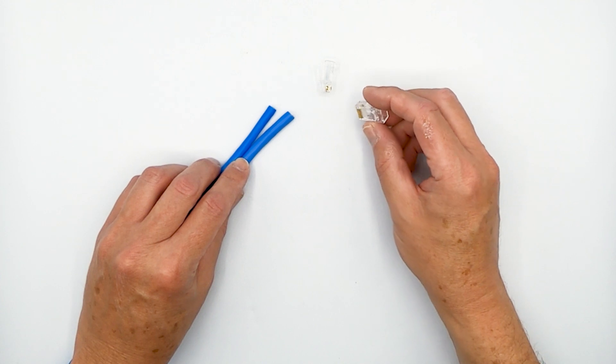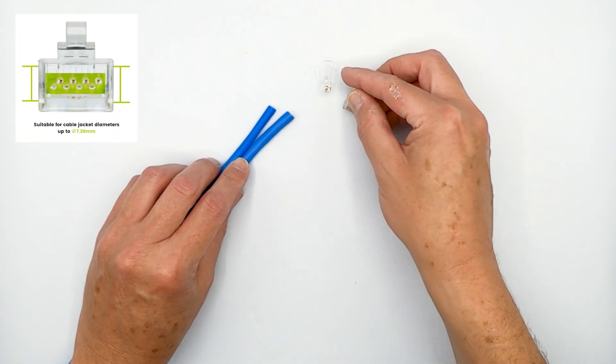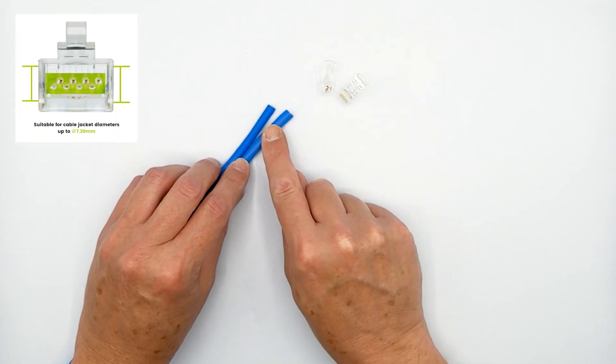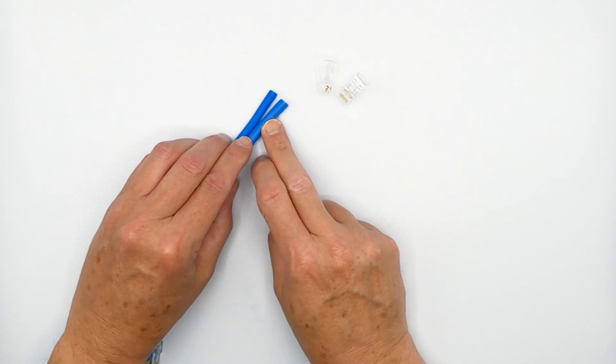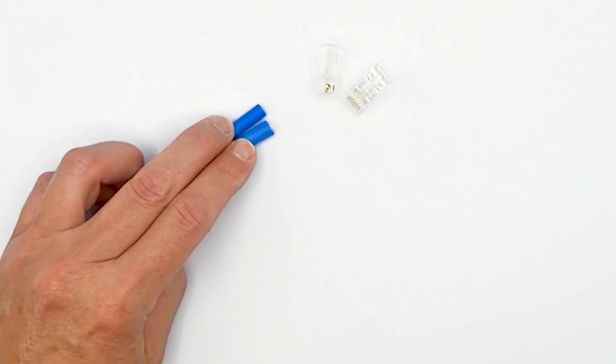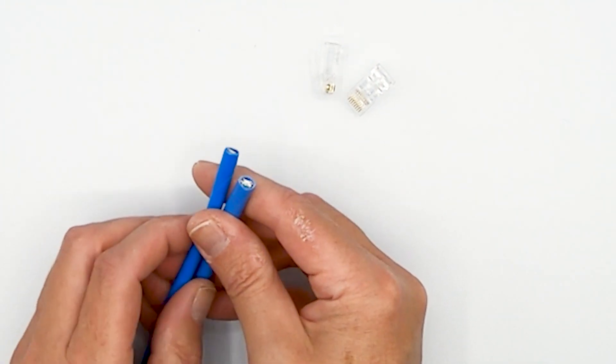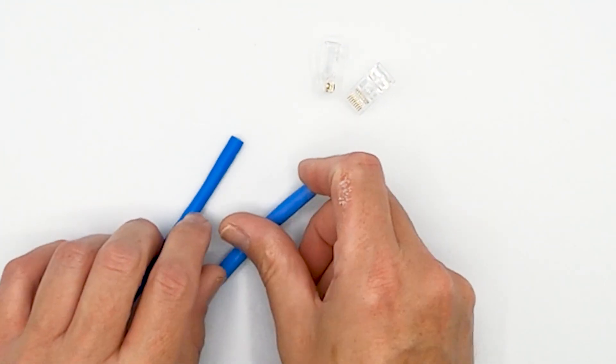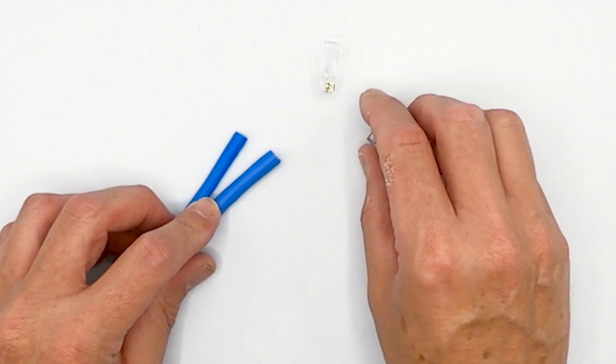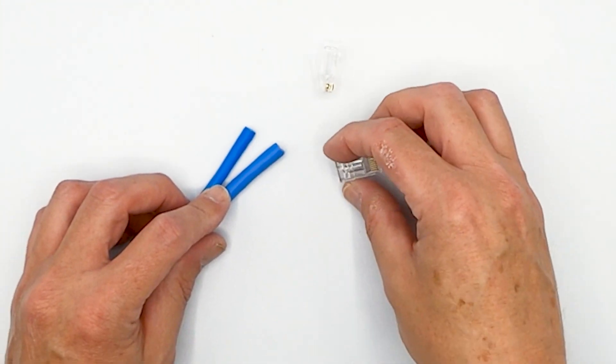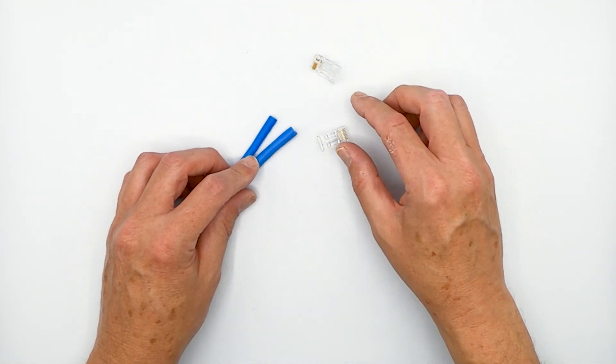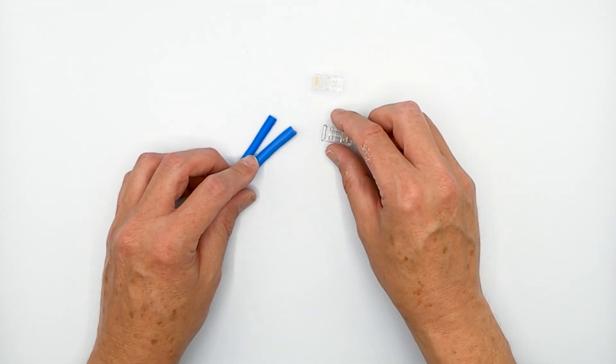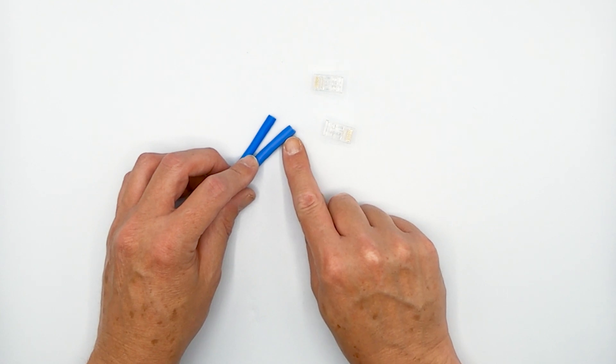We have our Category 6/6A plug and we have a Category 6A riser cable here and a Category 6 riser cable. And as you can tell, there is a significant difference in thickness between them. Some cables do need to be ovalized in order to get it to fit in the back of the plug.